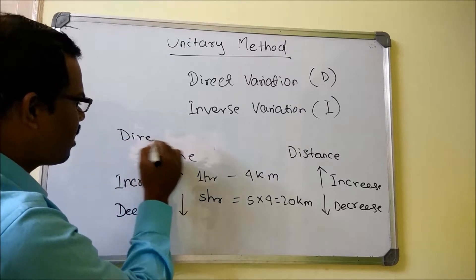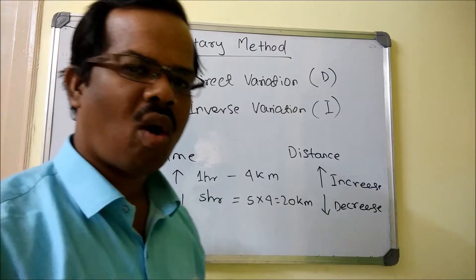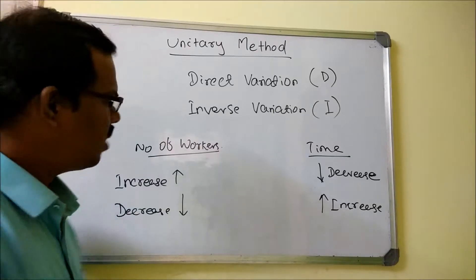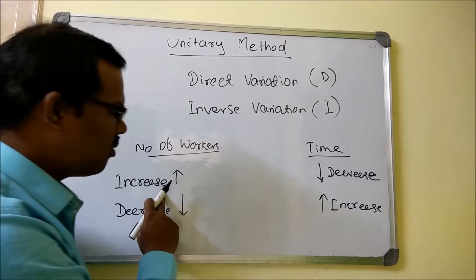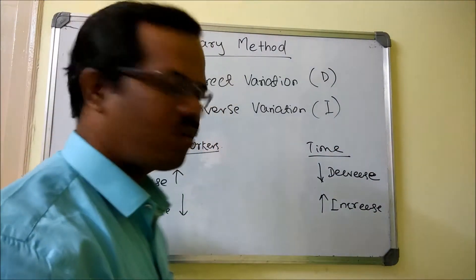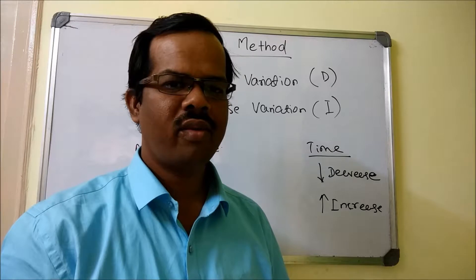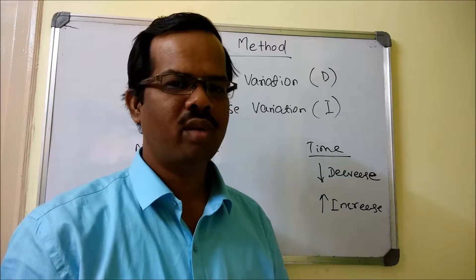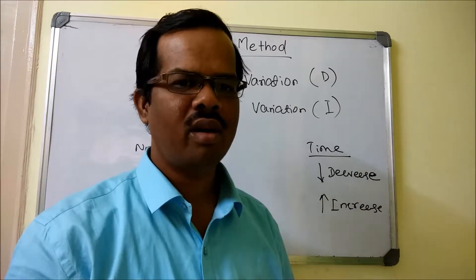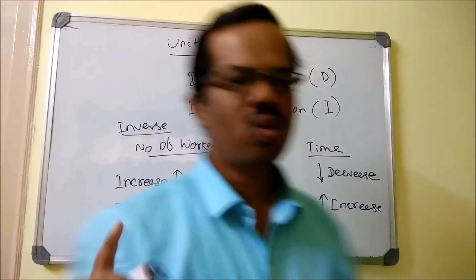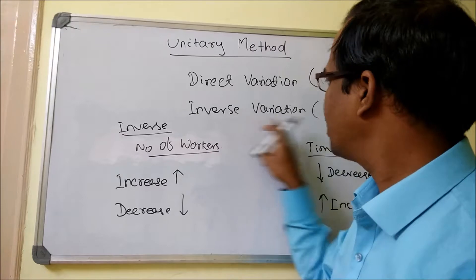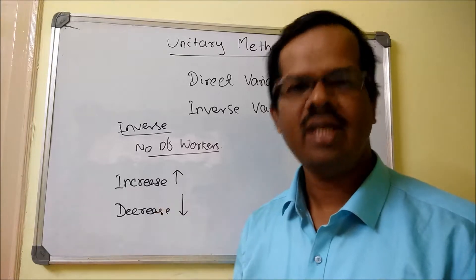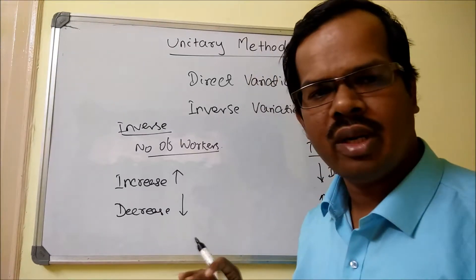Inverse variation is the opposite of direct variation. The relationship between number of workers and the time taken to complete a particular work: if you increase the number of workers, the time to complete the work decreases. More people will take less time, whereas fewer people will take more time to complete that work. This kind of relationship is called inverse variation.